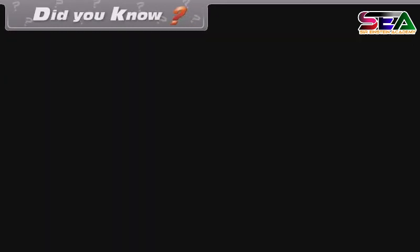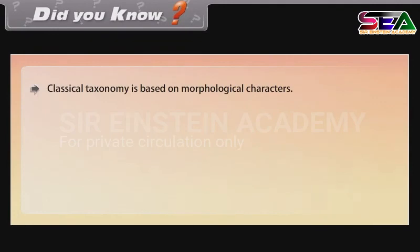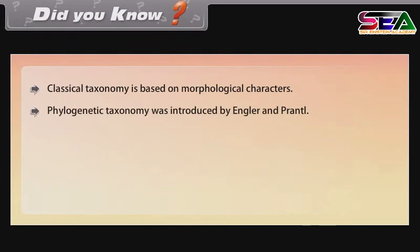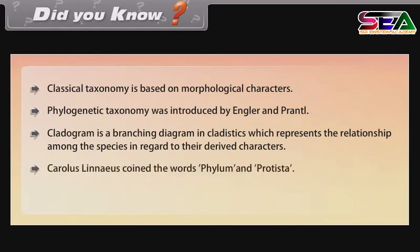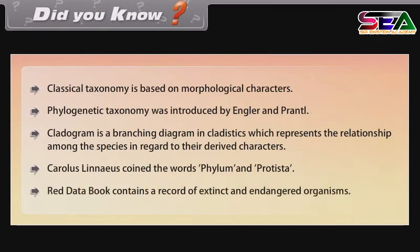Did you know? Classical taxonomy is based on morphological characters. Phylogenetic taxonomy was introduced by Engler and Prantl. A cladogram is a branching diagram in cladistics which represents the relationships among species with regard to their derived characters. Carolus Linnaeus coined the words phylum and Protista. The Red Data Book contains a record of extinct and endangered organisms.